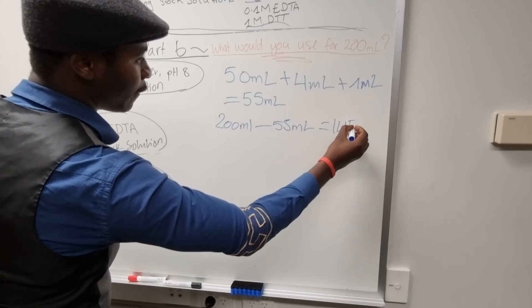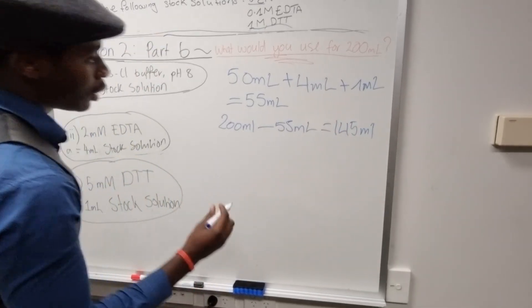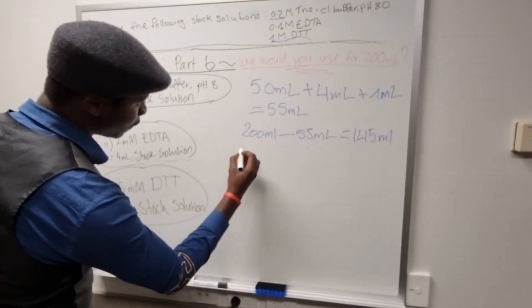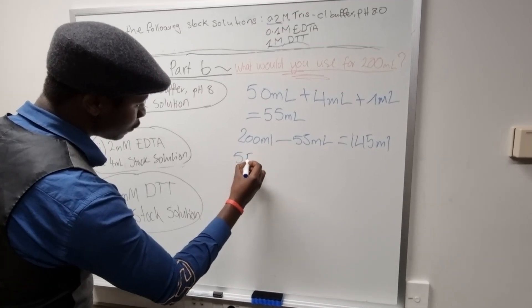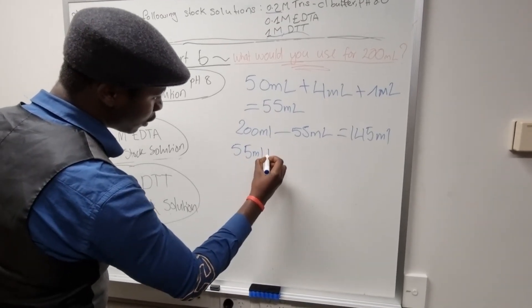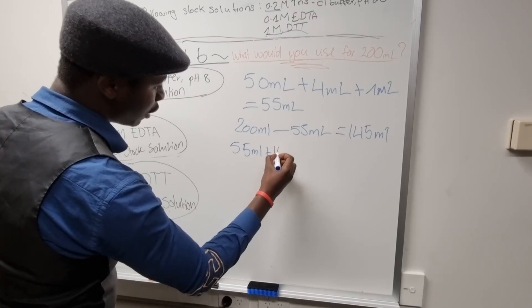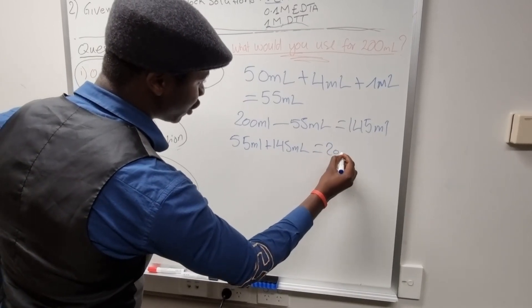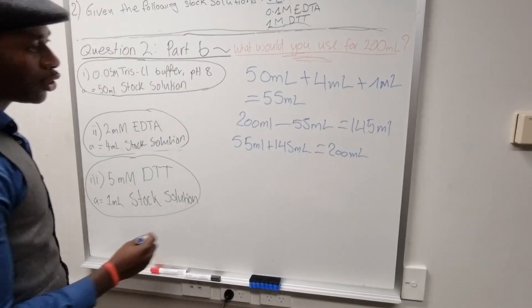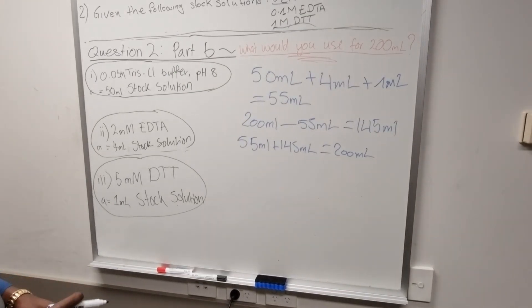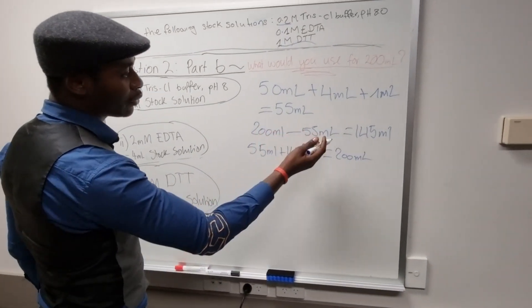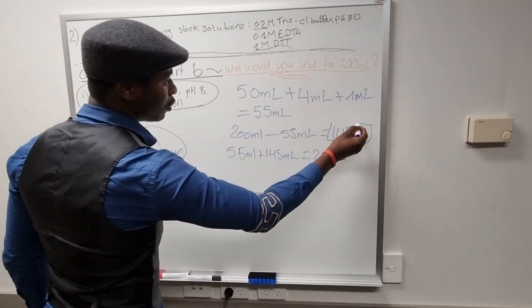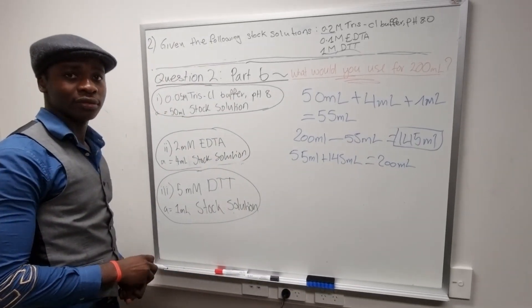To make up the solution to 200 milliliters: 200 − 55 = 145 milliliters. We can verify: 55 + 145 = 200 milliliters. So we need to add 145 milliliters of deionized water. That is our final answer.